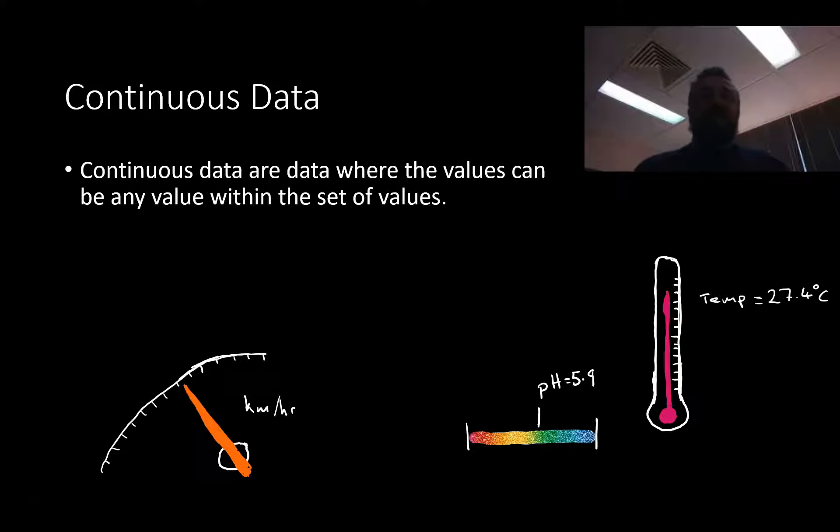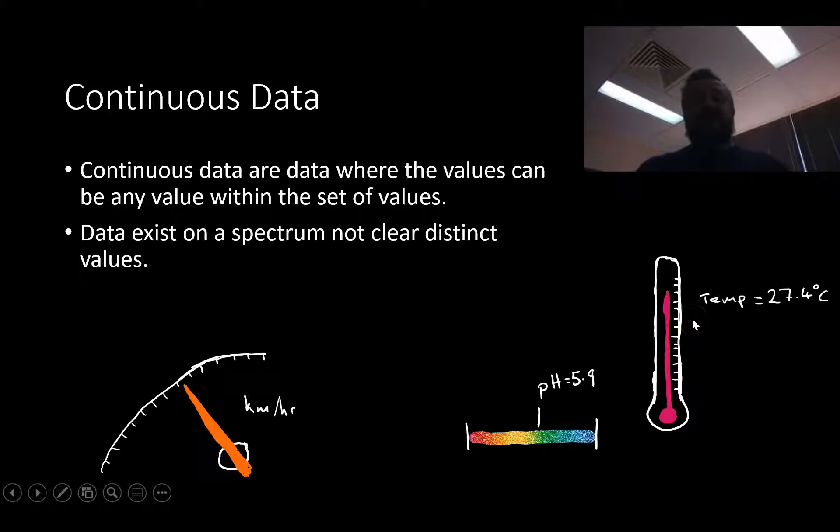So continuous data. Continuous data, where the values, so as long as we've got a set value, so between here and here, it can be anywhere along that line, okay? So it exists on a spectrum, not clear, distinct values. So for example, temperature can be 27 degrees, 27.1, 27.2, 27.25, 27.255, and it can go infinitely down, as long as we can measure it, right? So data exists on a spectrum, not clear, distinct values.